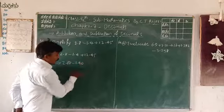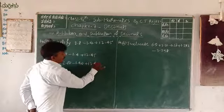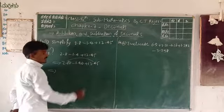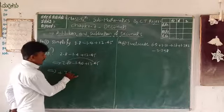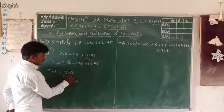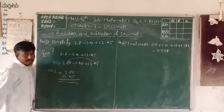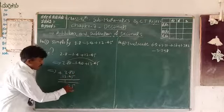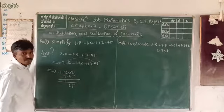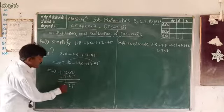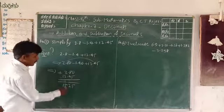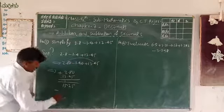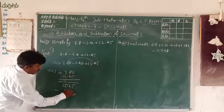First, add only the positive numbers: 2.80 plus 12.45. Working: 0+5=5; 8+4=12, carry 1; 2+2+1=5; 1+1=1 — wait, 2+2=4, 4+1=5; answer is 15.25. This is the sum of positive numbers.